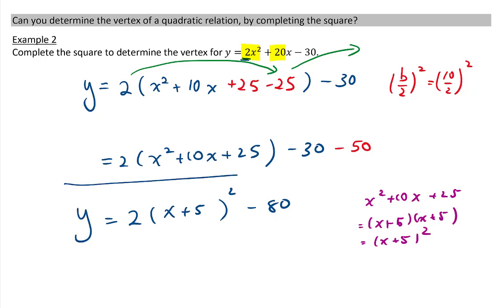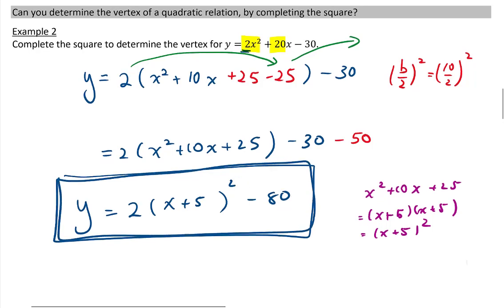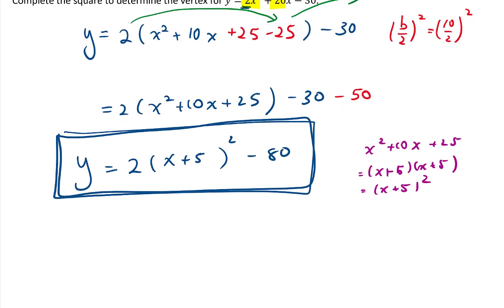So now we have our equation in vertex form. If we want the vertex, we can see it by taking out the h and the k. So our vertex is negative 5 and negative 80.